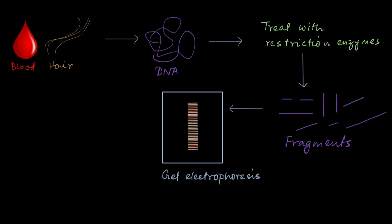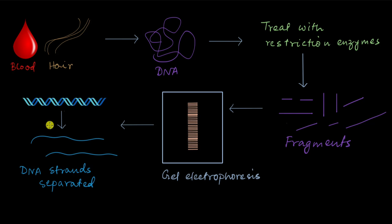Before that, what we have to do is we have to separate the DNA strands. You know that DNA is double-stranded, right? So, we take the DNA through this procedure called denaturation, which separates the two strands in the DNA.